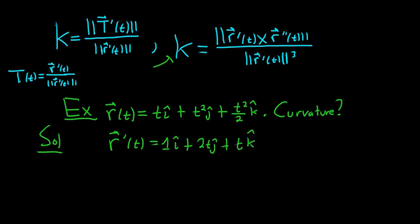So if we were going to use the first formula, we have to take the magnitude of this, divide by it, construct T, and then take the derivative. So that's going to be really nasty. So it might be better to try to use this formula, so let's try it.